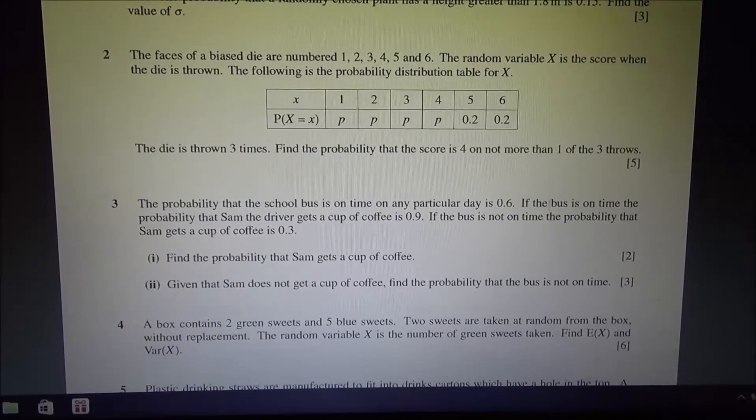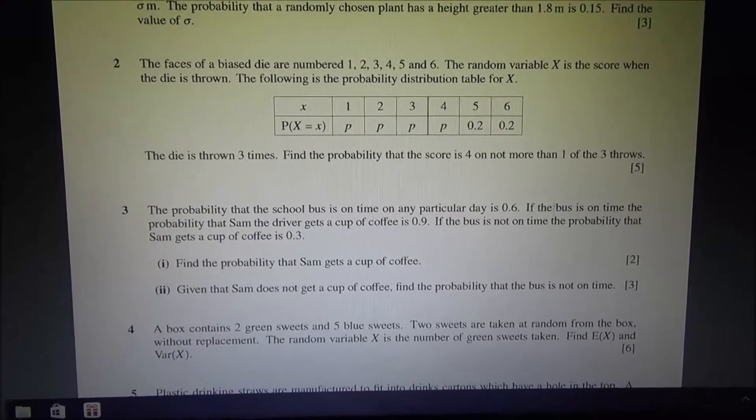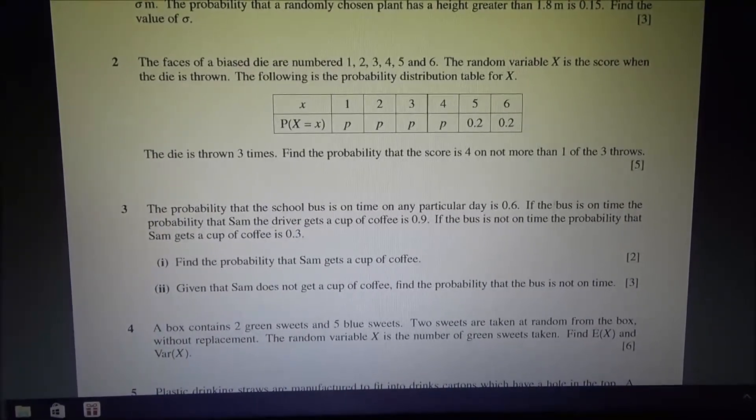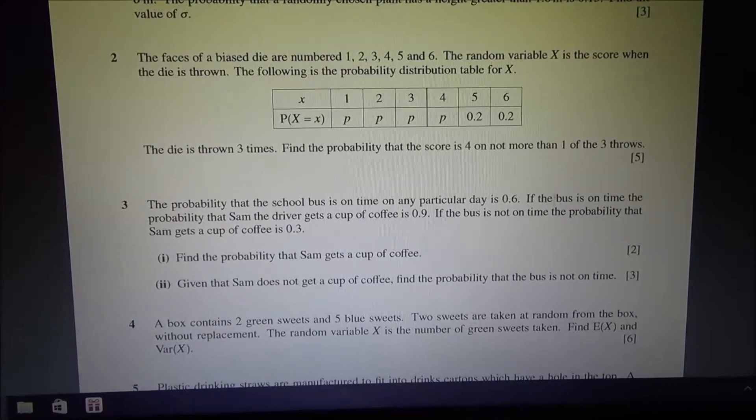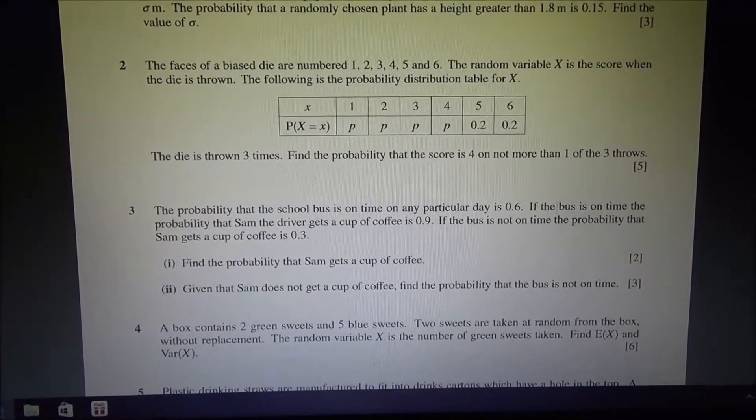The faces of a biased die are numbered 1, 2, 3, 4, 5, and 6. The random variable X is the score when the die is thrown. The following is the probability distribution table for X. The die is thrown three times.